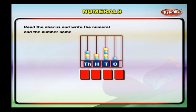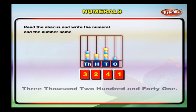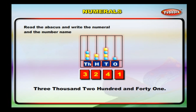In this abacus, we have one bead in the ones column, four beads in the tens column, two beads in the hundreds column, and three beads in the thousands column. We write this as 3,241. We write this in words as three thousand, two hundred and forty-one.